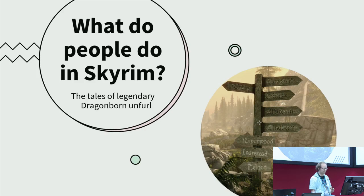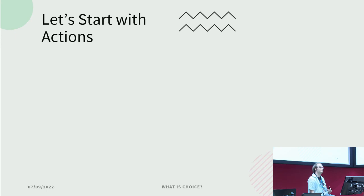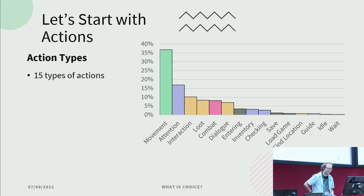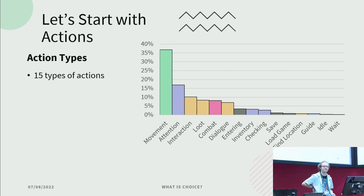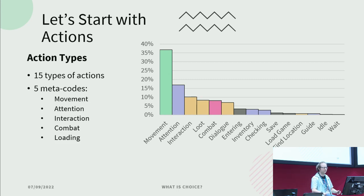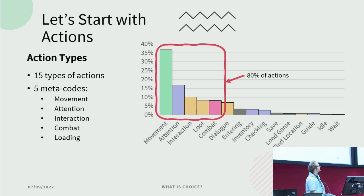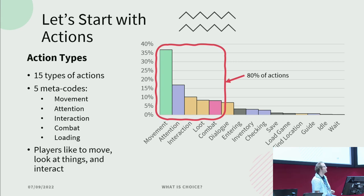So what did people do in Skyrim? Let's start with actions. Does anyone want to guess what the most common thing people do in open world games? Walk. This took me 50 hours to find out — but yep, people love moving around. People move around, people go 'ooh shiny, what's that thing over there, why is that giant T-posing down the road?' They interact with things, look at chests, loot and pick up stuff, fight things. These 15 actions fall into five meta-codes: moving, looking at things, interacting, fighting, and loading. That's 80% of actions. Players like to move, look at things, and interact — that is the three-way summary of an open world game.